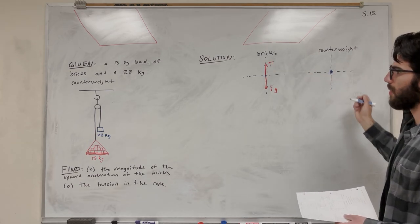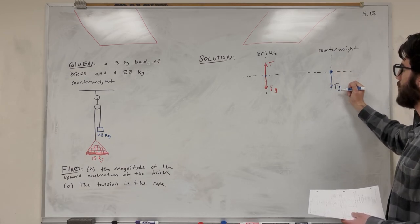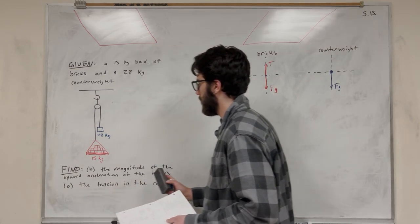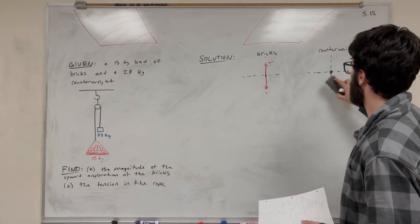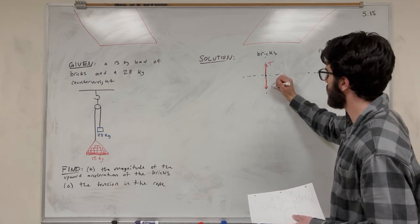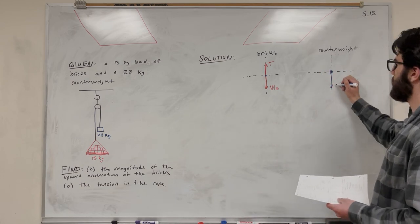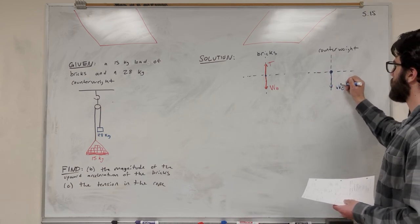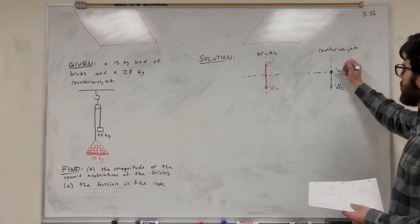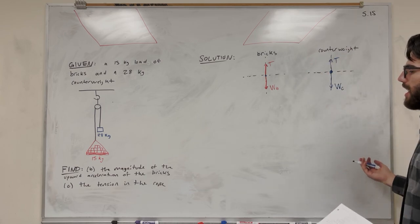For the counterweight, it also has a force of gravity. I'm going to use 'weight' to distinguish the two gravity forces — weight of the bricks (W_B) and weight of the counterbalance (W_C). The counterweight also has tension acting on it, and this tension is equal to the tension on the bricks side — it's the same tension throughout.